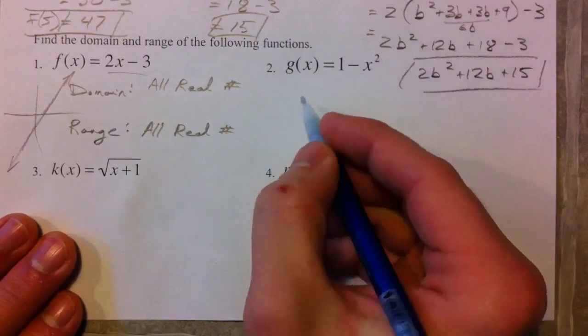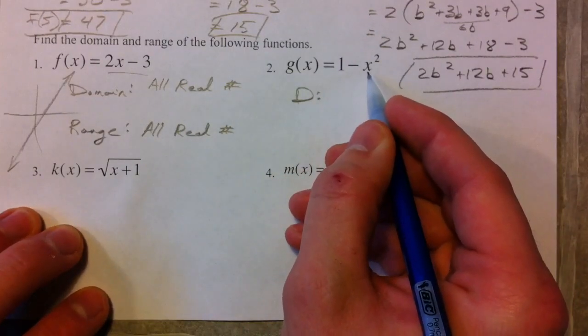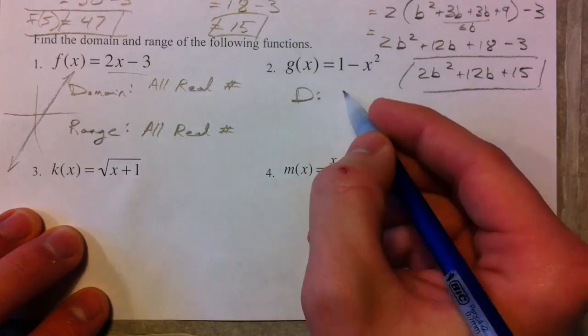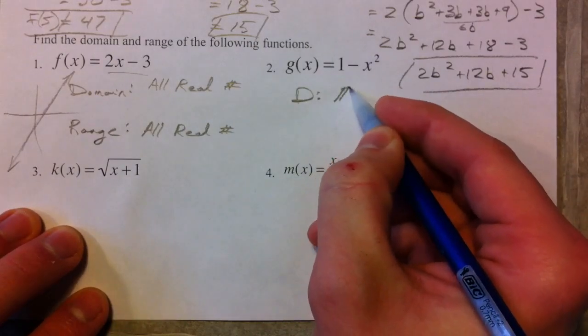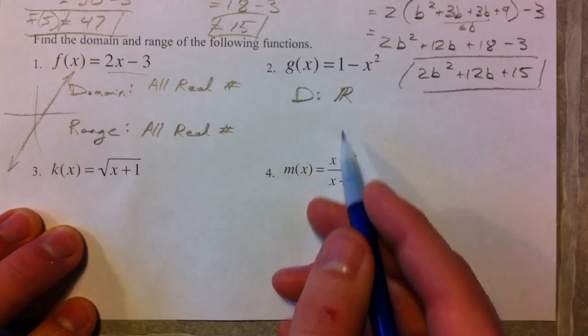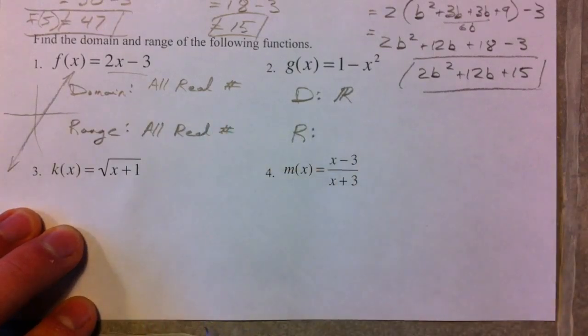1 minus x squared. Domain, x's were not restricted at all with x's. We're going to see some restrictions when we talk about the square root, but so this is still all real numbers. And so I'm going to use the symbol just to shorten this a little bit. It kind of looks like the paragraph symbol in English class, just with the double line, but with an r. Represents all real numbers.